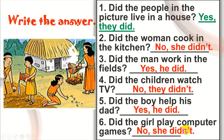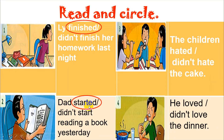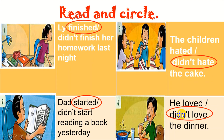Let's move to the next part: Read and Circle. Look at pictures 1, 2, 3, and 4, then circle the correct answer. Number 1: Lee finished her homework last night. Number 2: She started reading a book yesterday. Number 3 — very good, didn't hate. And the last one: He didn't love the dinner. Well done!